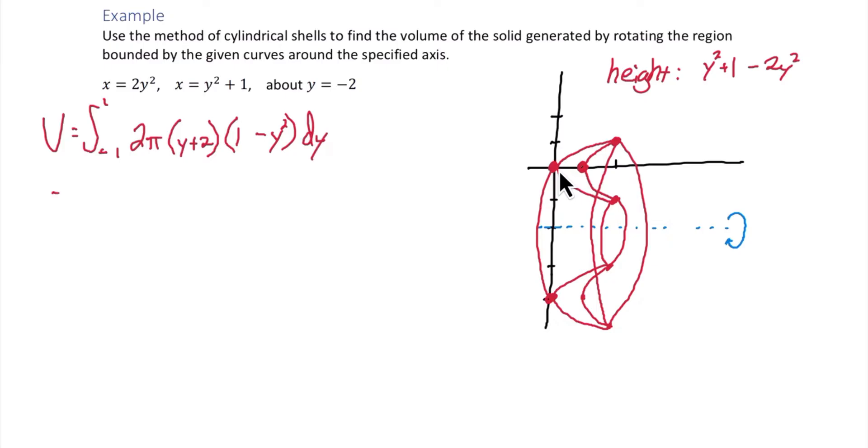Let's go through and simplify this. I'll first pull 2 pi out of the integral. And then distribute. We get y minus y cubed plus 2 minus 2y squared.